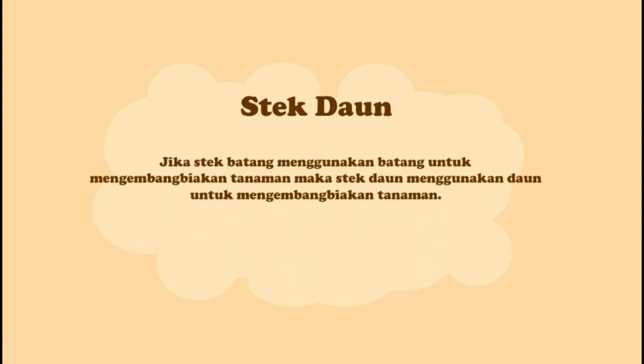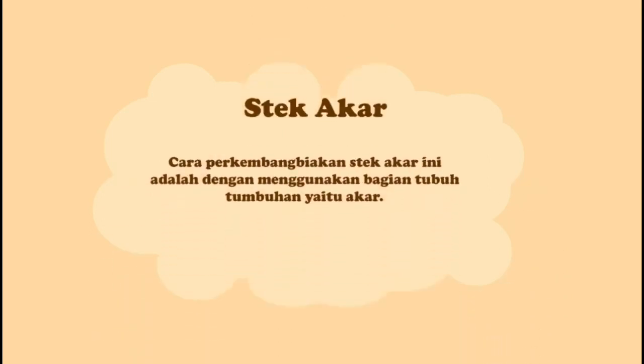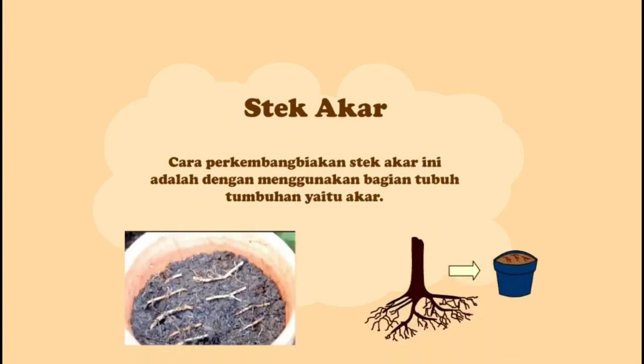Yang kedua, stek daun. Stek daun menggunakan daun untuk mengembangbiakan tanaman. Caranya adalah dengan memetik daun yang sudah tua dan memotongnya beserta batang di bawahnya agar lebih mudah tumbuh. Yang ketiga, stek akar. Cara perkembangbiakan stek akar ini adalah dengan menggunakan bagian tubuh tumbuhan yaitu akar.